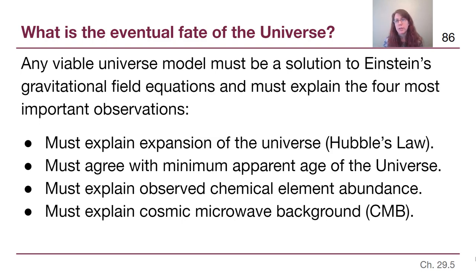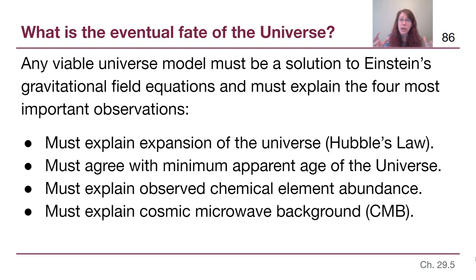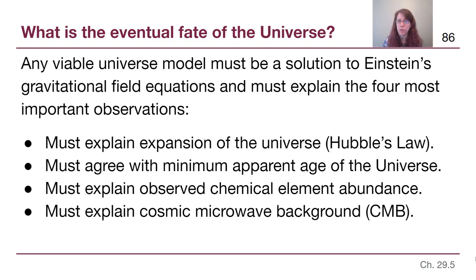A model must also explain the observed chemical element abundance. In terms of regular baryonic matter, the universe is about 75% hydrogen and 25% helium — a consequence of the three minutes of Big Bang nucleosynthesis, where the hot dense early universe went through fusion processes to build hydrogen and helium. Our model needs to replicate that stage to match what we currently see. Finally, any model has to explain the cosmic microwave background — that glow from when the universe cooled down enough to let photons flow freely — which was the key focus of the previous video.